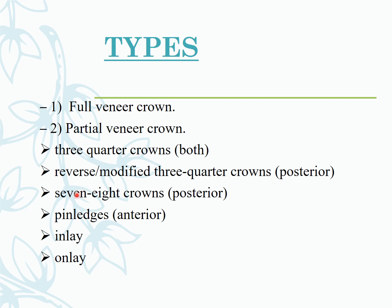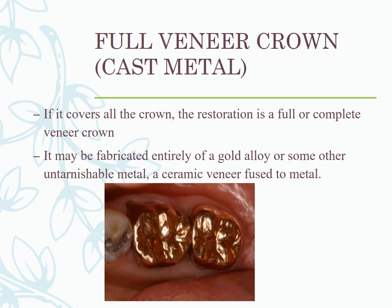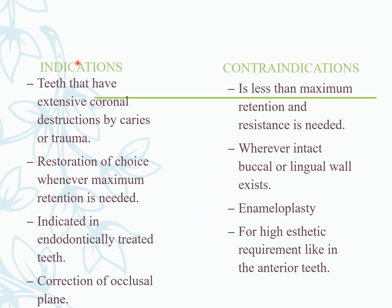Other partial veneer types include pin ledge, frontier inlay, and onlay. Full veneer crowns cover the entire tooth surface and may be fabricated from gold alloy, other untarnishable metals, or ceramic fused to metal. There are many material options available.